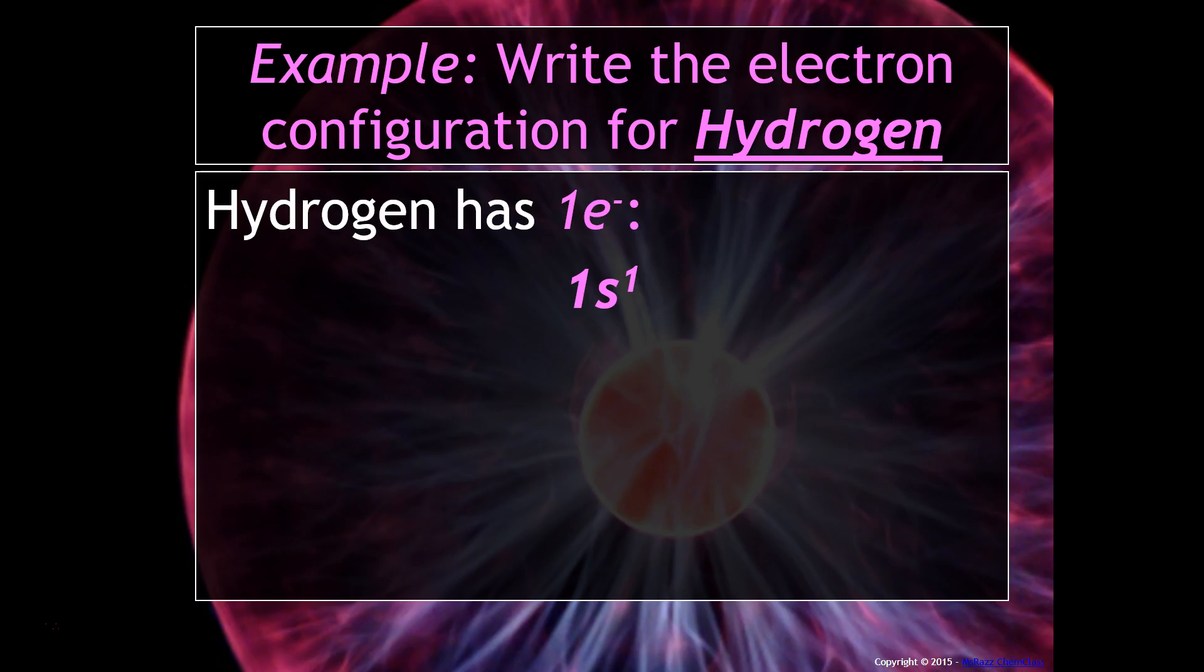This is the electron configuration for hydrogen. As you might expect, the one in front is the energy level, the s is the sublevel, and the one is the number of electrons. So to write 1s¹ is the electron configuration for hydrogen.